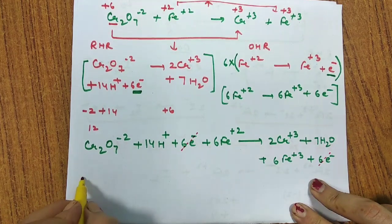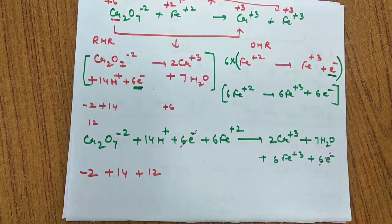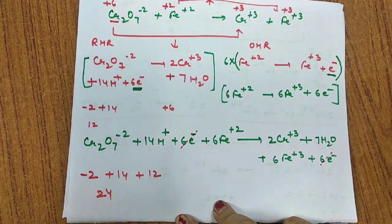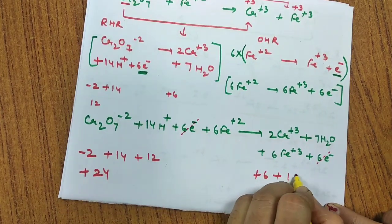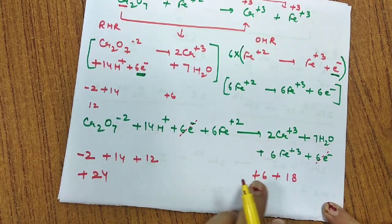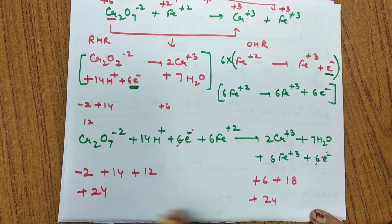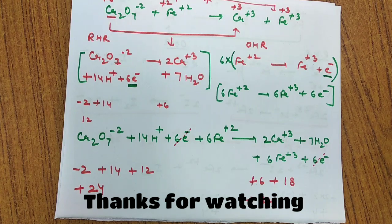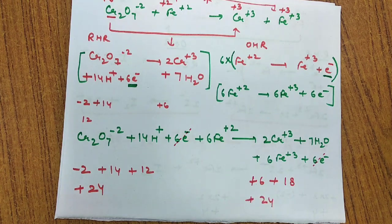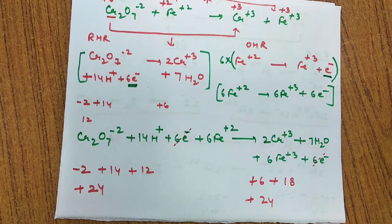Checking charge: left side = -2 + 14 + 12 = +24. Right side: 2×(+3) + 6×(+3) = +6 + 18 = +24. Equal charge on both sides — the equation is completely balanced by the ion electron (half reaction) method. Now try questions 18 and 19 from your NCERT. If you find any problem, ask in the comment section. Thanks for watching — please subscribe to the channel.